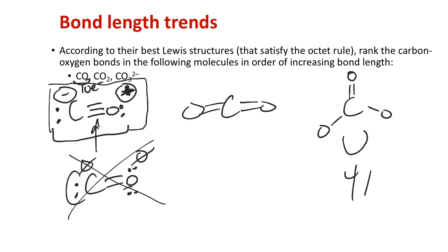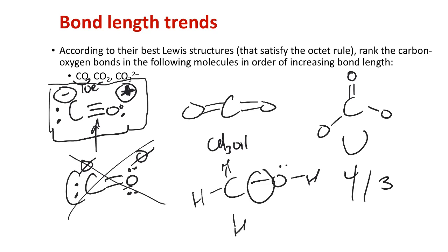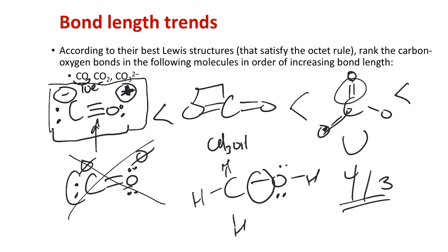Comparing CO bond lengths: CO has a triple bond (shortest), CO2 has double bonds (slightly longer), carbonate CO3²⁻ has bonds of about four-thirds order (all equal due to resonance), and methanol CH3OH has a CO single bond (longest). We can use Lewis structures to predict bond lengths, and comparing against actual bond lengths shows that our model makes sense.